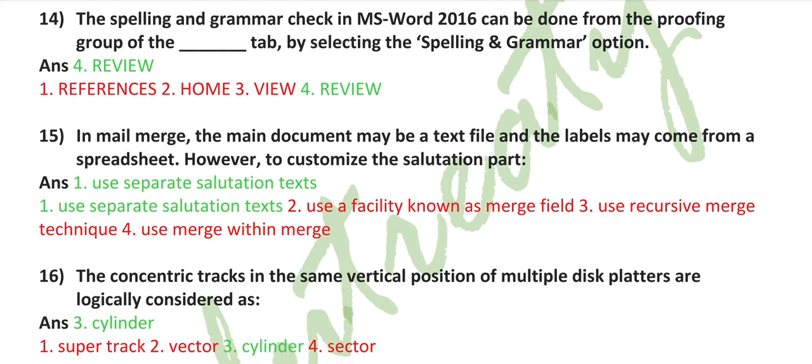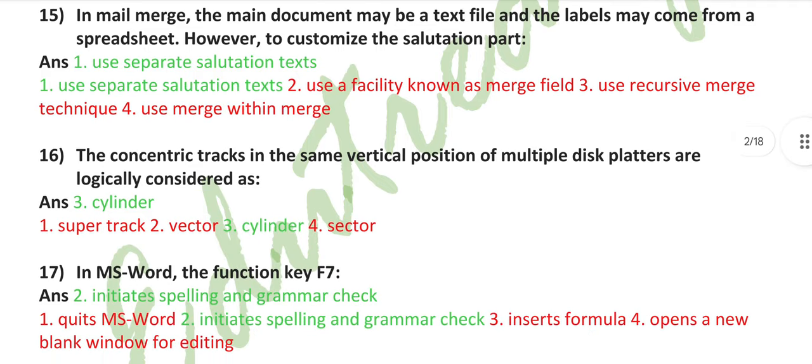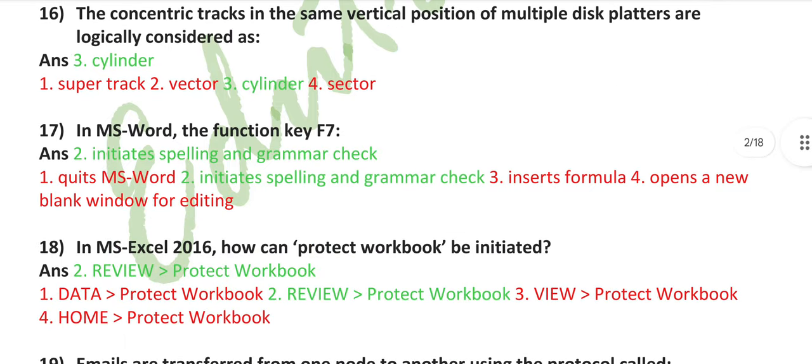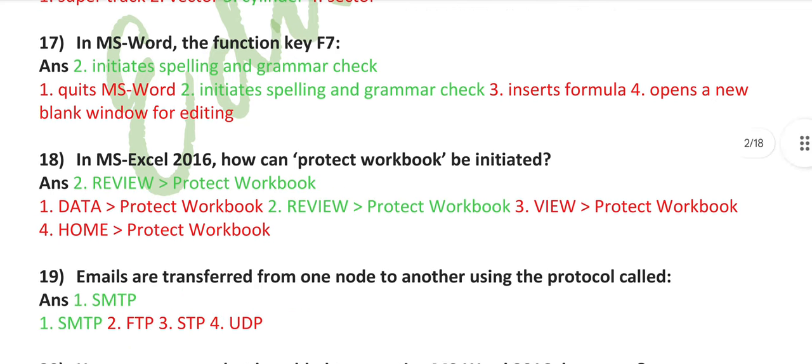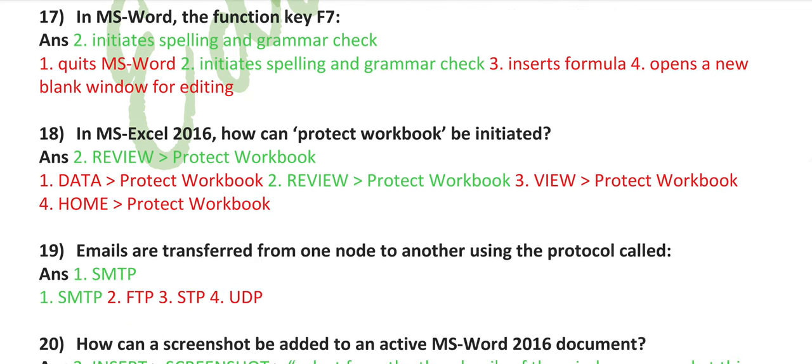The spelling and grammar check in MS Word 2016 can be done from the proofing group of the review tab by selecting the spelling and grammar option. In mail merge, the main document may be a text file and labels may come from a spreadsheet. However, to customize the salutation part, use separate salutation text. The concentric tracks in the same vertical position of multiple disks are logically considered as a cylinder. In MS Word, the function key F7 initiates a spelling and grammar check.